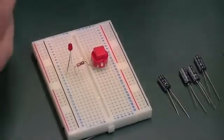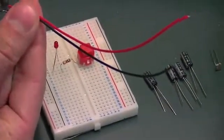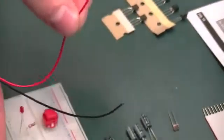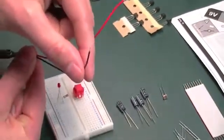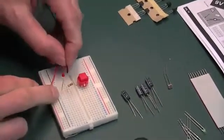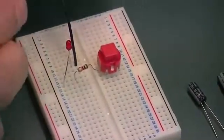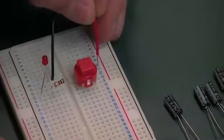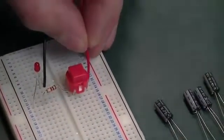And we also need a battery holder. This has a plus and a minus. The red lead is the plus, the black lead is the minus. The black lead goes where the shortest lead of the LED was, and the other one goes right here.